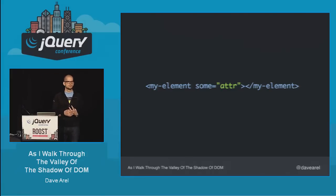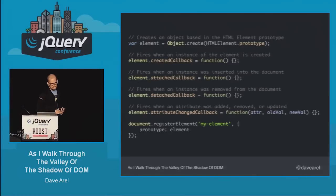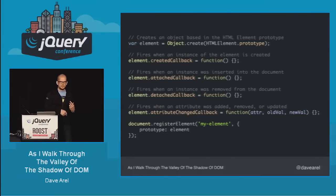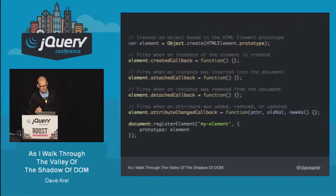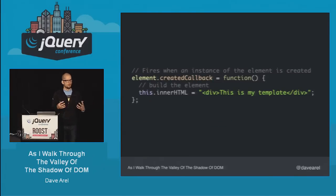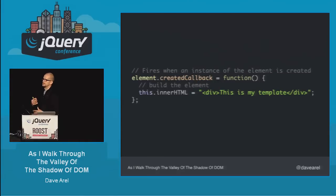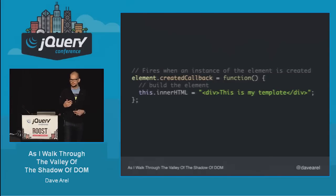It's a pretty easy, pretty nice API. If we wanted to create a tag called 'my-element,' the code would look something along these lines. We would extend the HTML element prototype. We could tie into a bunch of callbacks that happen during the lifecycle: when it's created, when it's attached to the DOM, when it's detached from the DOM, when an attribute has changed — we can be aware of those things and make the necessary adjustments.